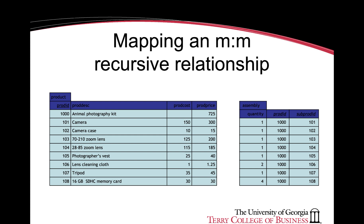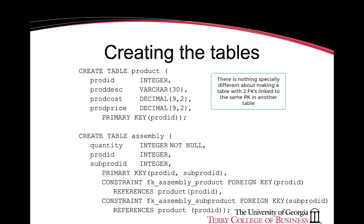Here is example data representing a many-to-many recursive relationship. Products include camera, camera case, and so forth. Many of these products make up an animal photography kit, which is itself a product. The assembly table shows prod_ID (e.g., 1000 for animal photography kit) and sub_product_ID indicating which sub-products compose that product. Here is how the tables for those entities can be created.